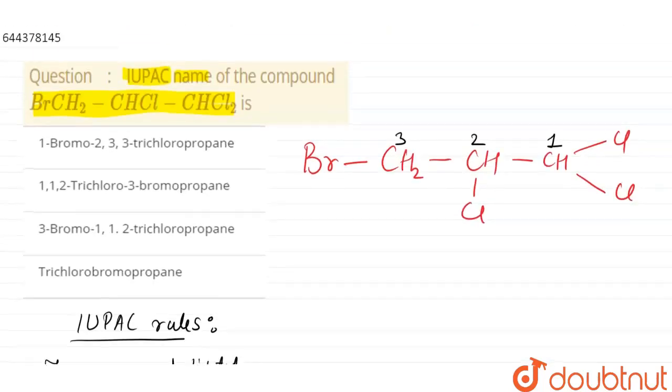As you can see, at third position we have bromine, and at first and second position we have chlorine. Chlorine is C and bromine is B, so chlorine should be given preference first. So the IUPAC name will be...